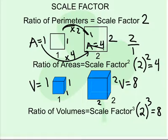So when thinking about scale factors: the scale factor of the perimeters is just the ratio; the scale factor for the areas is that scale factor squared; and the ratio of the volumes is the original scale factor cubed.